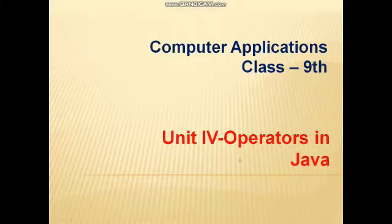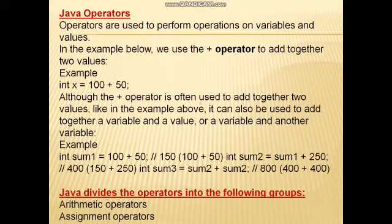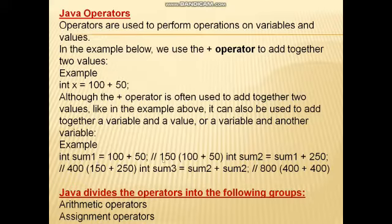Unit 4: operators in Java. Operators are used to perform operations on variables and values. In the example below, we use the plus operator to add together two values. For example, int x — these are the two values and this is the operator. The plus operator can be used to add together two values, or a variable and a value, like x plus 50, or two variables like x plus y. For example, int sum1 = 100 + 50, which gives 150. Then int sum2 = sum1 + 250, which gives 400.